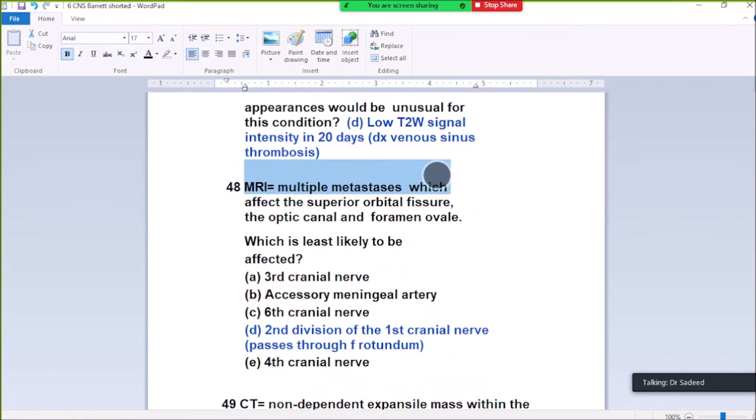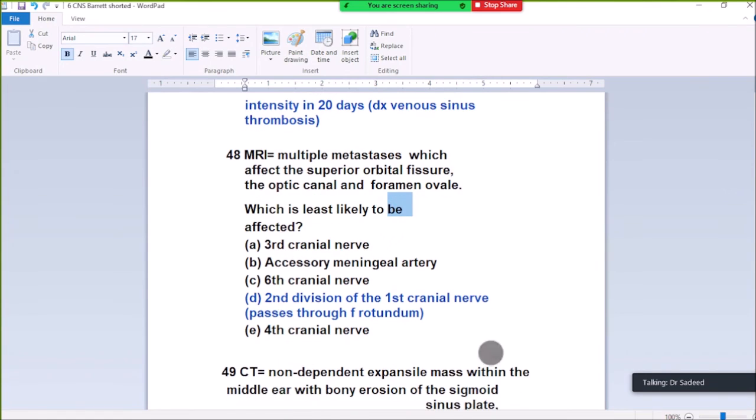Question 48. MRI shows multiple metastases which affect the superior orbital fissure, the optic canal, and the foramen ovale. Which nerve is least likely to be affected? The second division of the first cranial nerve, which passes through the cribriform plate. The metastases affect the superior orbital fissure, optic canal, and foramen ovale. Structures in the superior orbital fissure will be affected and the foramen ovale. But the second division of olfactory nerve passes through the cribriform plate, so it will not be affected.